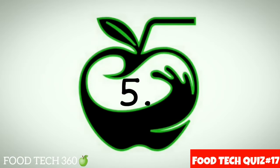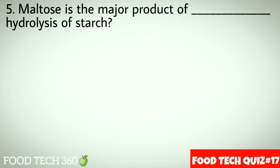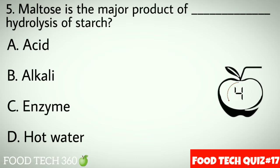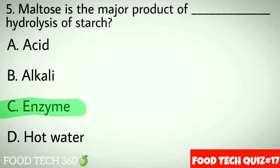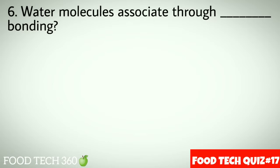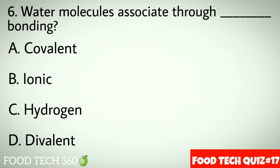Question number 5: Maltose is a major product of dash hydrolysis of starch. Options: A. Acid, B. Alkali, C. Enzyme, D. Hot water. Correct answer: C. Enzyme.